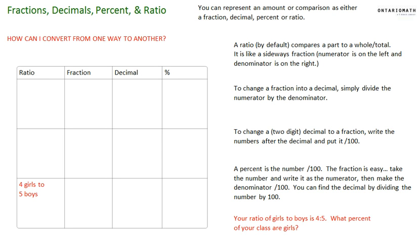The big idea is that you can represent an amount or comparison as either a fraction, a decimal, a percent, or a ratio. If you're given one of them, you can convert and find all four answers. Sometimes you need to do that in life.